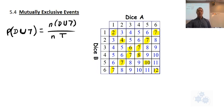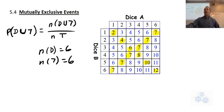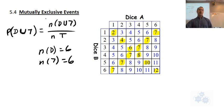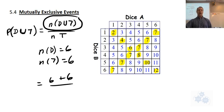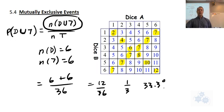There are six chances for doubles and six chances for a sum of seven. Since there are no spaces that are both doubles and seven, they're mutually exclusive. So the number of doubles or seven is six plus six equals twelve. The total outcomes are 36, giving us 12 out of 36, which is exactly one third, or 33.3% chance.